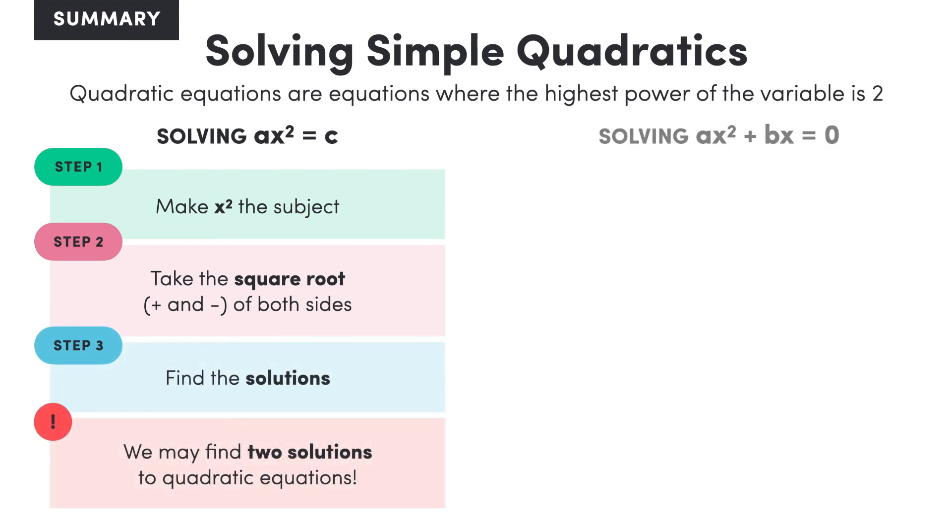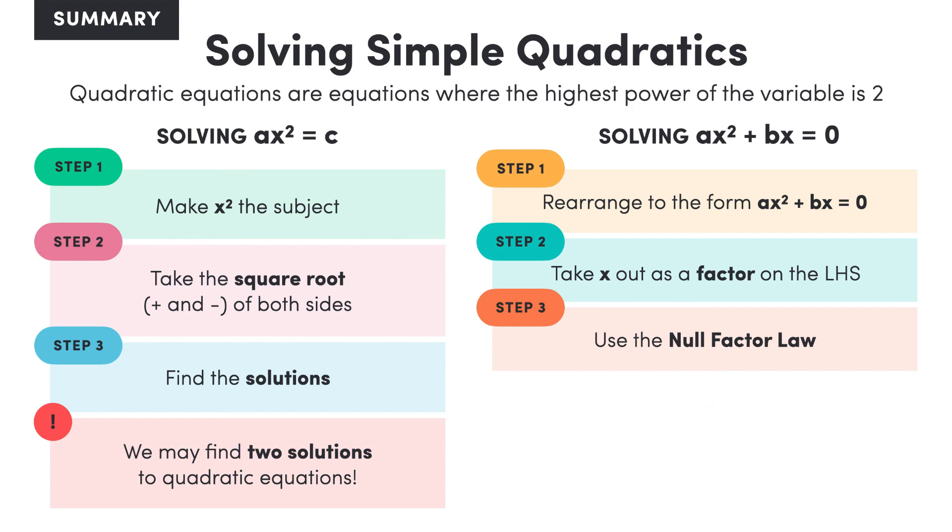To solve quadratics of the form Ax squared plus bx equals zero, we rearrange the quadratic to this form if necessary, before taking x out as a factor of the left hand side. Then we apply the Null Factor Law, and simplify the two equations that we're left with to find the solutions. Remember, don't divide the equation by x to simplify. That brings us to the end of this lesson. See you for the next one!